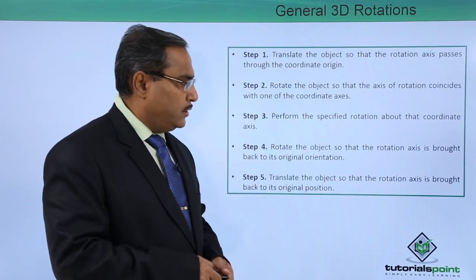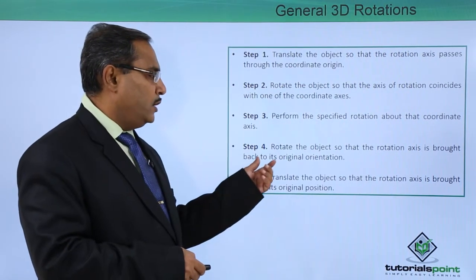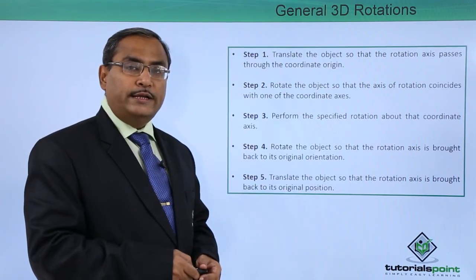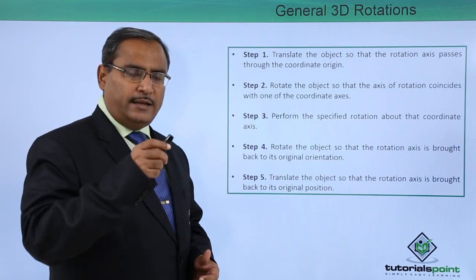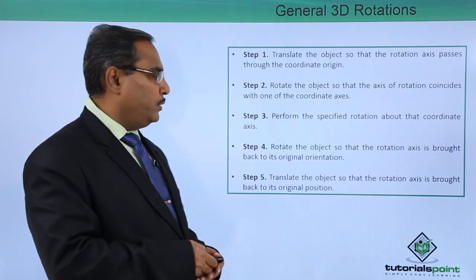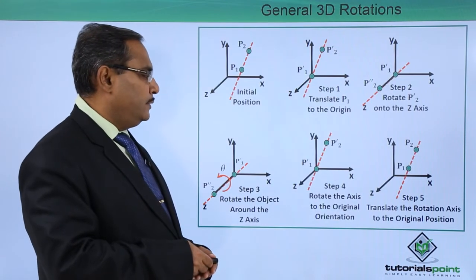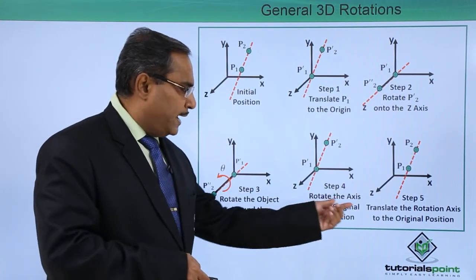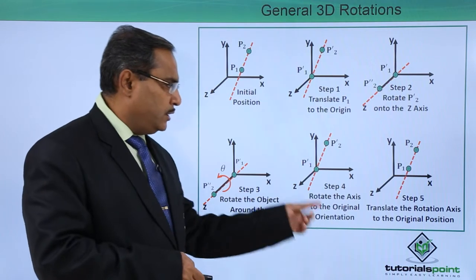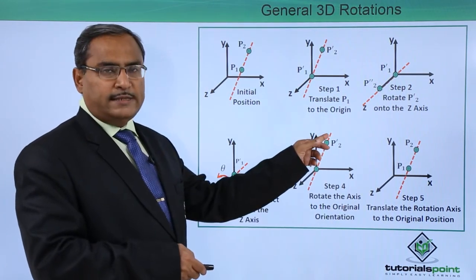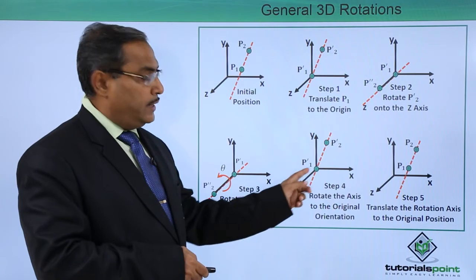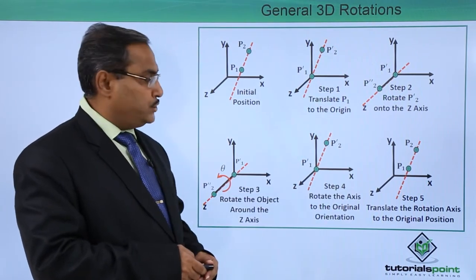Rotate the object so that the rotation axis is brought back to its original orientation. Now again that axis will be brought back to the original orientation. Step 4: rotate the axis to the original orientation. Now we are bringing this axis to the original orientation. Here also we require one rotation.